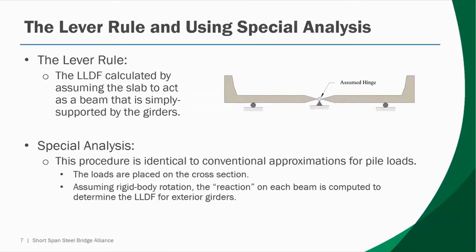There are two terms that will pop up throughout your investigation of AASHTO LRFD specifications that warrant explanation. The first is the lever rule. The lever rule is a tool that can be used to compute a live load distribution factor when your bridge falls outside the range of what's presented in the specification. For most short-span steel bridge designs this is highly unlikely, but there are instances where the lever rule is used even within a given range — for example, exterior girder distribution in one-lane-loaded scenarios for short-span I-girder bridges. The live load distribution factor is computed using the lever rule by assuming the slab acts as a beam simply supported by the girders. The truck is then placed on the bridge, and the support reactions at each girder are computed and taken as the live load distribution factor.